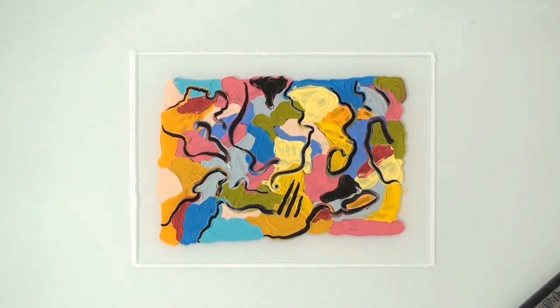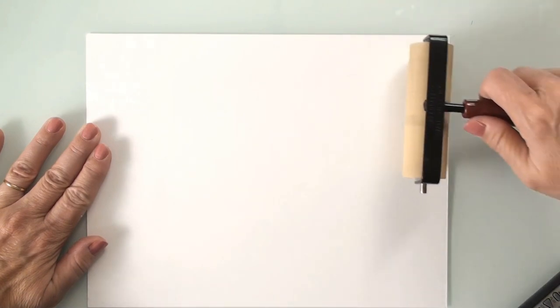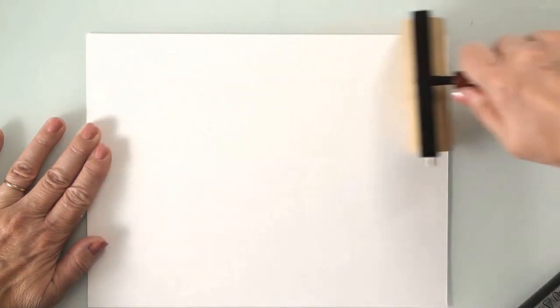When I'm finished, I place a sheet of white stonehenge paper over the painted area and transfer the original painting by pressing down with a brayer.